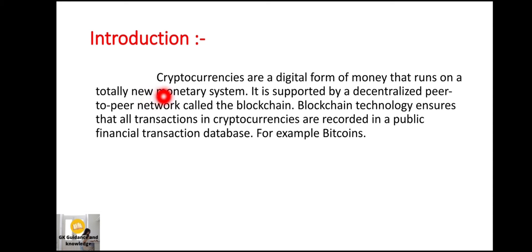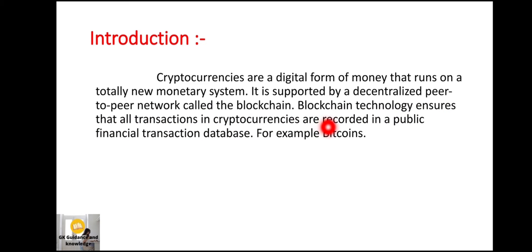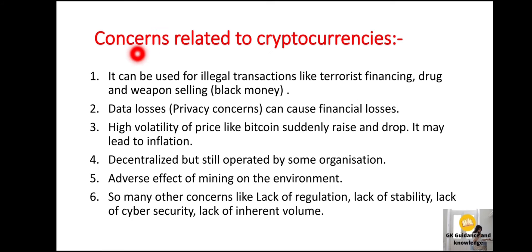Our introduction: cryptocurrencies are a digital form of money that runs on a totally new monetary system. It is supported by the decentralized peer-to-peer network called the blockchain. Blockchain technology ensures that all transactions are recorded in a public financial transaction database, which is a ledger. Examples include Bitcoin and Dogecoin.